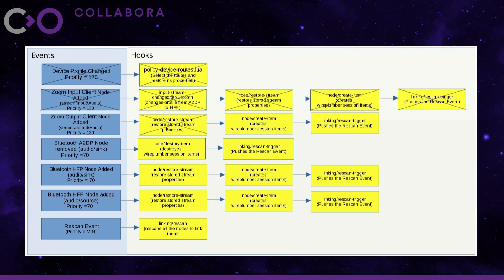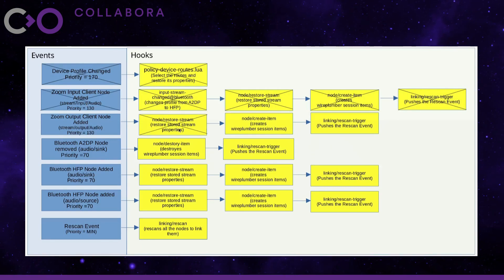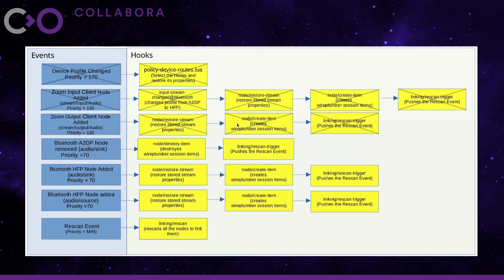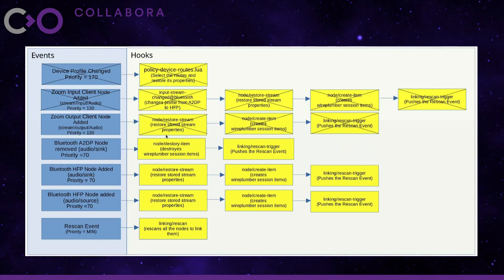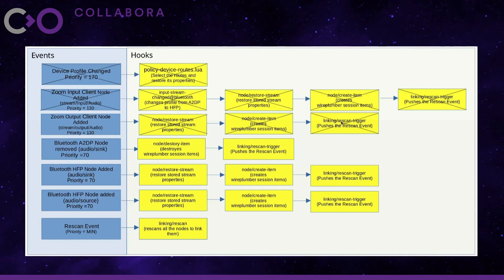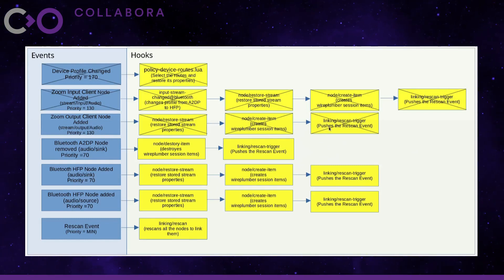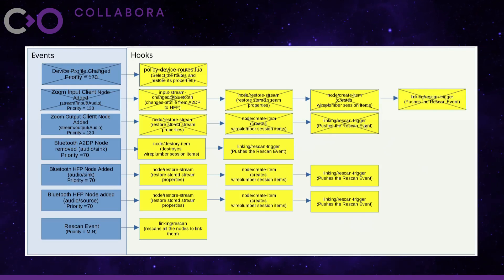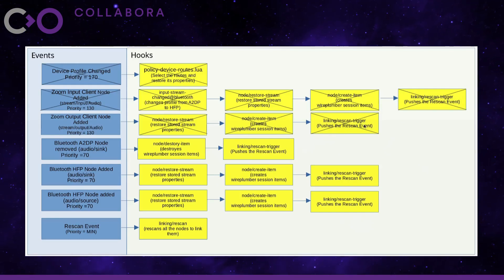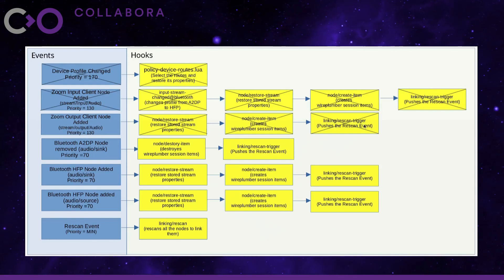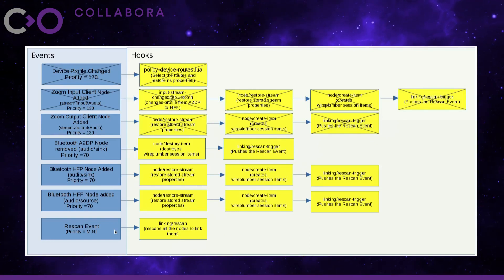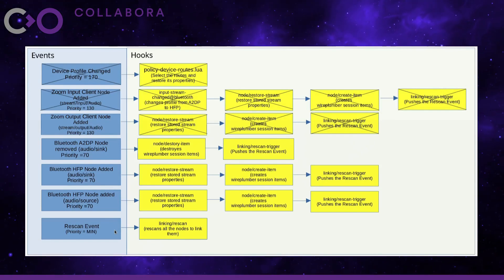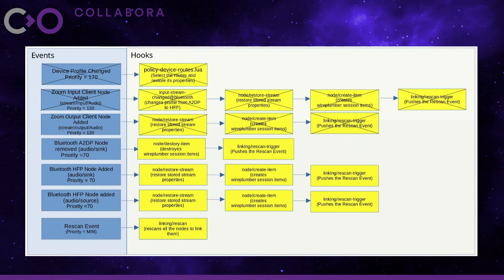Event dispatcher picks the next priority event and runs restore stream, create item, and rescan trigger. We have created the session item corresponding to this node and will have to link it, so we push another rescan trigger. The rescan trigger won't run the rescan process directly — it will try to run it via the rescan event. It tries to push the rescan event, but event dispatcher sees there is an existing rescan event already there, so it reuses it instead of pushing a new one.